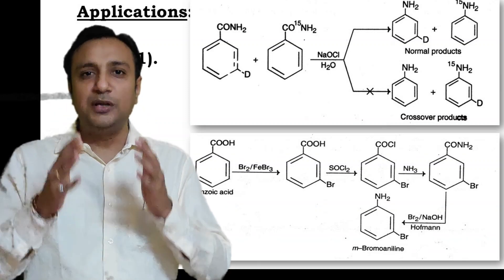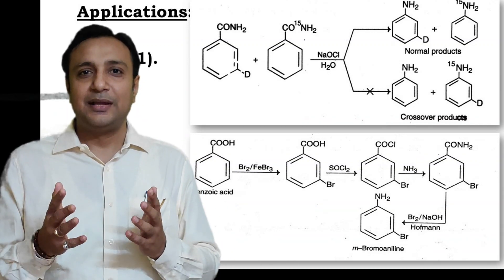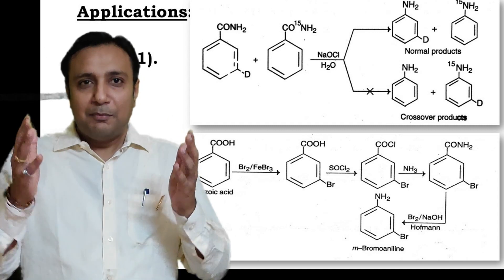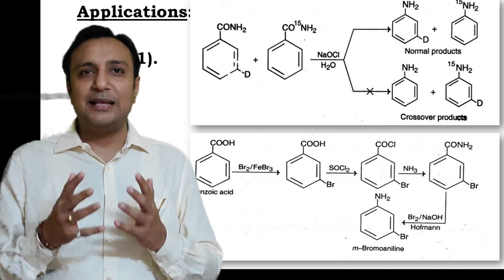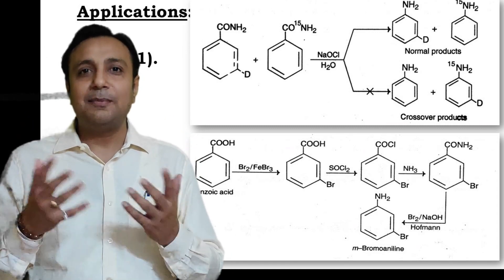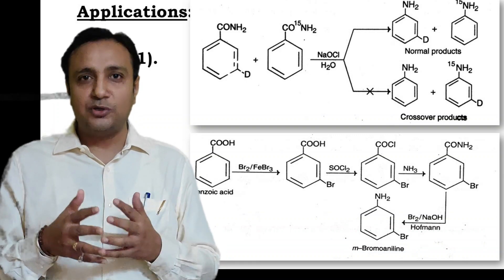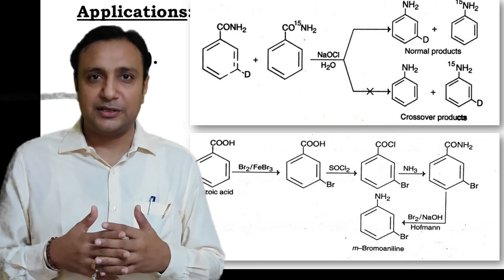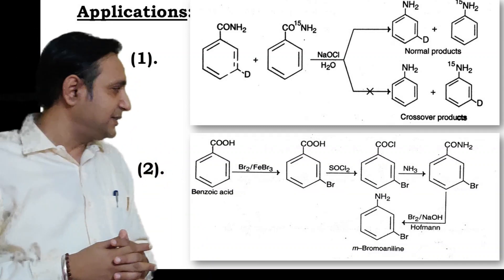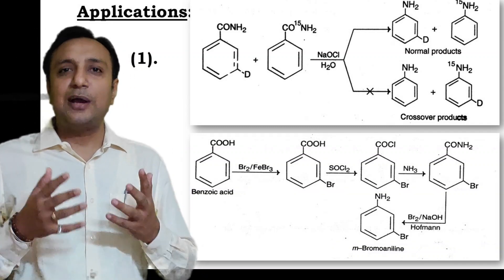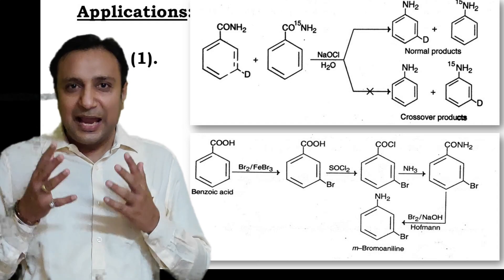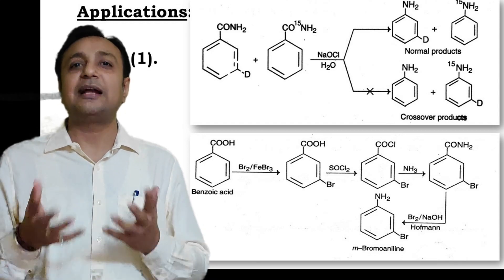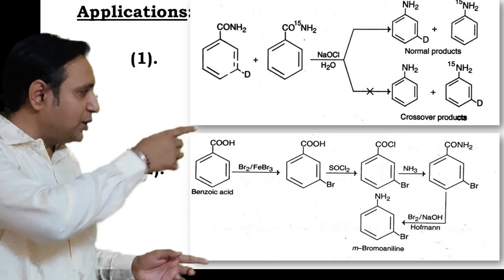When a mixture of 3-deuterio benzamide and benzamide containing isotopic nitrogen undergoes the Hoffmann reaction, it produces only simple products: 3-deuterio aniline and aniline containing isotopic nitrogen. No cross products are obtained during the reaction.